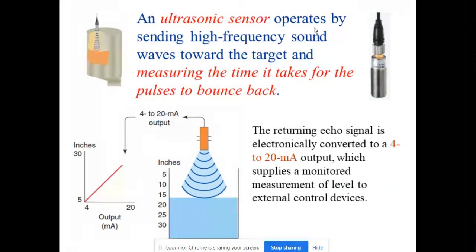The other one is ultrasonic sensor which operates by sending high frequency sound waves towards the target and measuring the time it takes for the pulse to bounce back. Let's say for the level, the light will travel to the level, to the liquid and will bounce back. That is how they calculate the level, the current level.